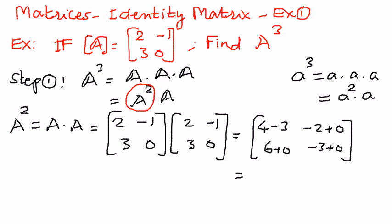We need to simplify this further: 4 minus 3 is 1; negative 2 plus 0 is negative 2; 6 plus 0 is 6; negative 3 plus 0 is negative 3. So we got 1, negative 2, 6, negative 3, which is the product of A times A.